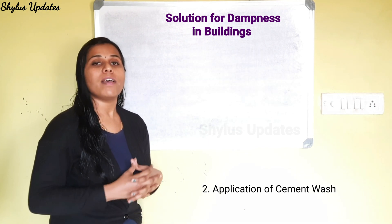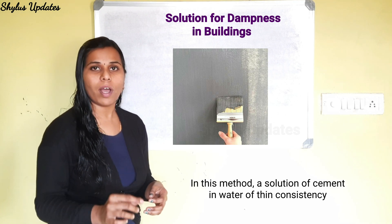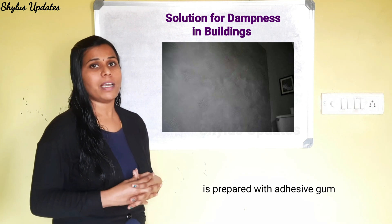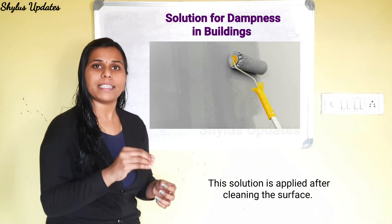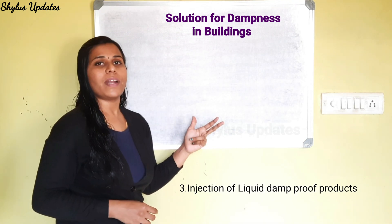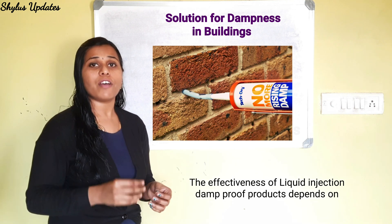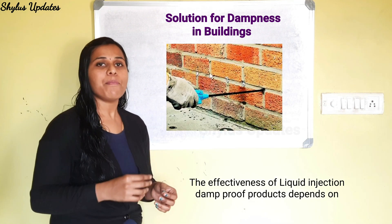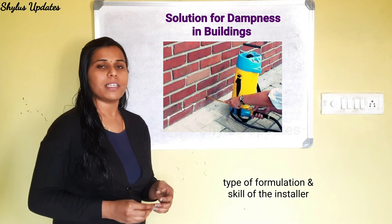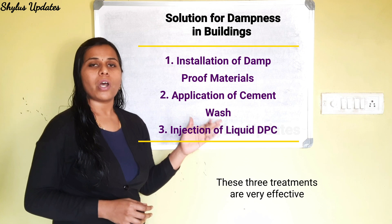The second treatment is application of cement wash. In this method, a solution of cement in water of thin consistency is prepared with adhesive gum, and this solution is applied after cleaning the surface. The third treatment is injection of liquid damp proof products. The effectiveness of liquid injection damp proof products depends on the type of formulation and the skill of the installer. These three treatments are very effective.